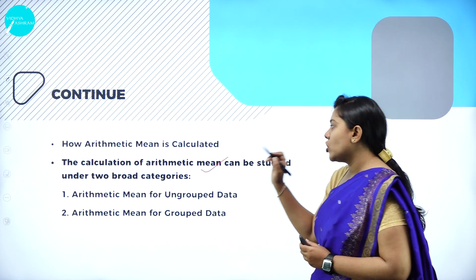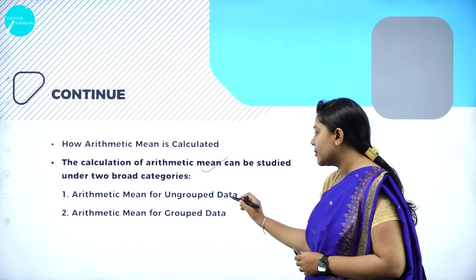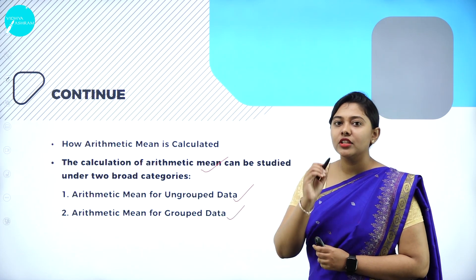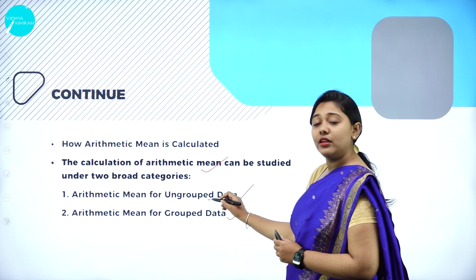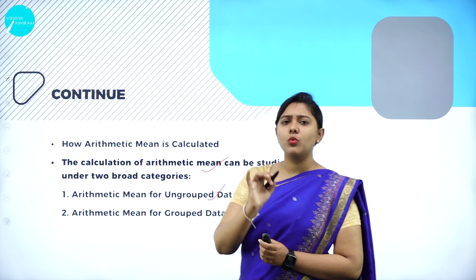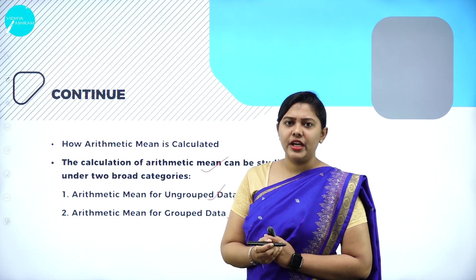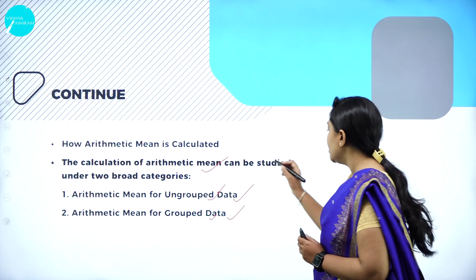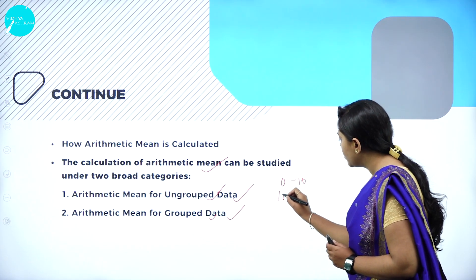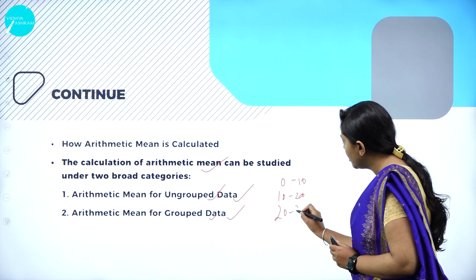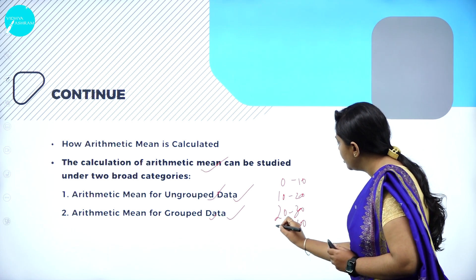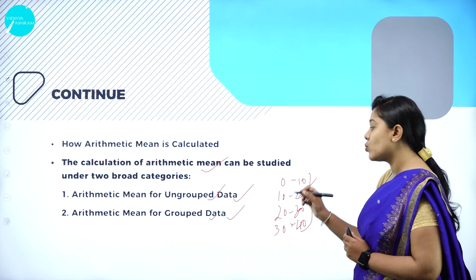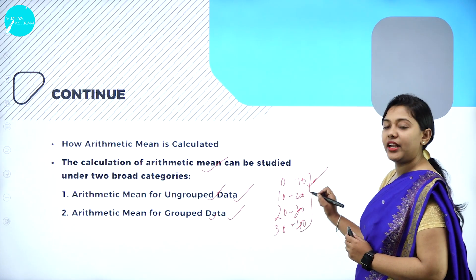Mean is calculated based on two categories: arithmetic mean for ungrouped data and arithmetic mean for grouped data. We will solve problems based on ungrouped data today. Ungrouped data is data which doesn't have any class interval. Grouped data has certain classes, like 0 to 10, 10 to 20, 20 to 30, 30 to 40, and so on — it has certain classes, and based on those classes we calculate.